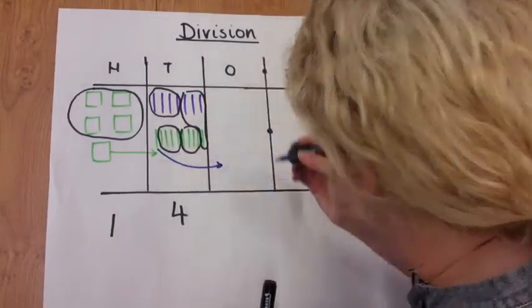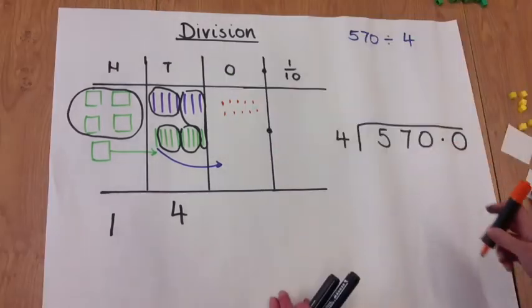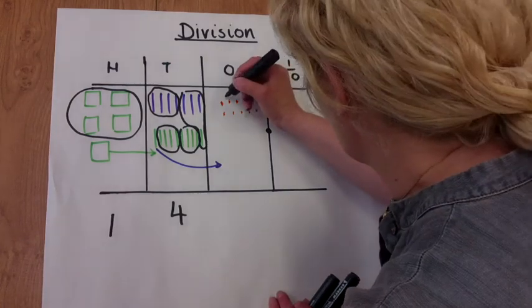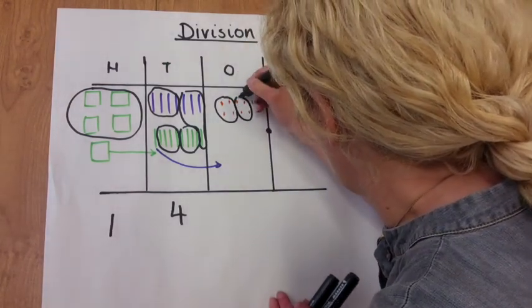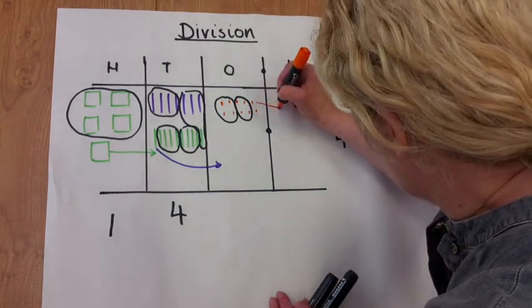Which we're going to regroup into the ones column. 4 goes into 10 twice. We've got the two ones left over.